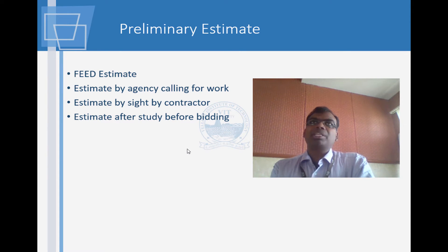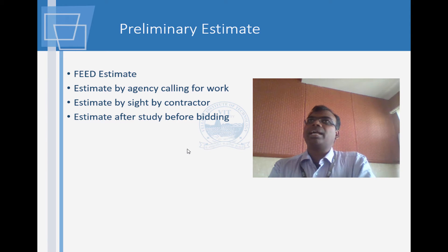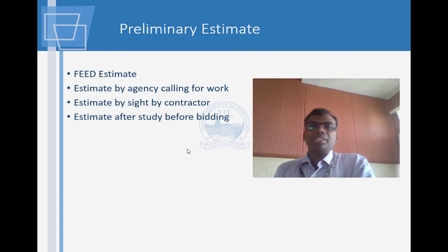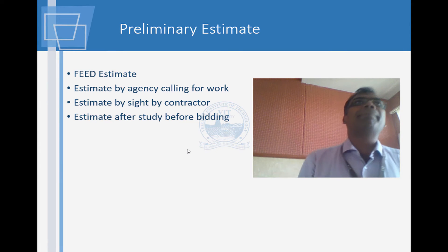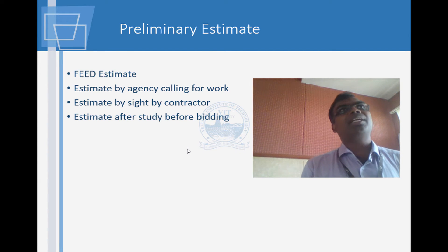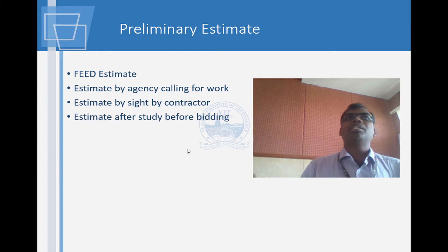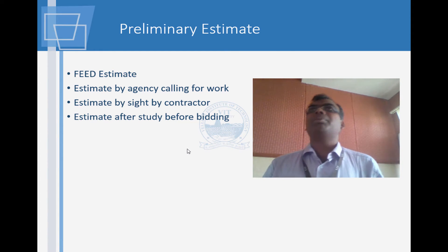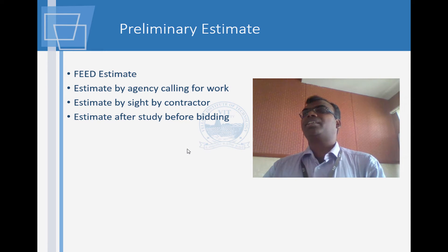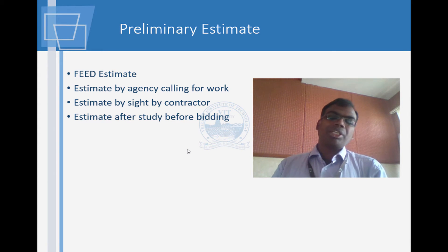The contractor then gets the bid documents, studies the specifications and the works involved, gets a detailed bill of quantities, and does the pricing. This is how preliminary estimates are done. Estimates have to be done at each stage. First, when giving a job to somebody, you should know how much it's going to cost — you ascertain whether it is worth taking up the project or whether to delay it.